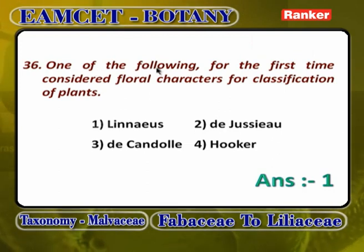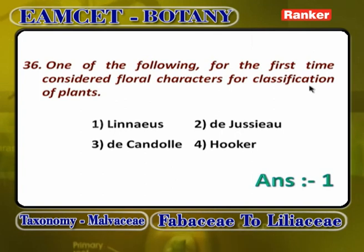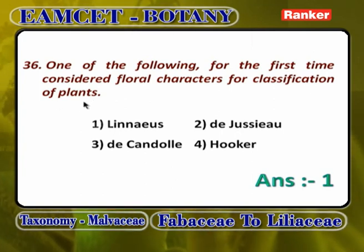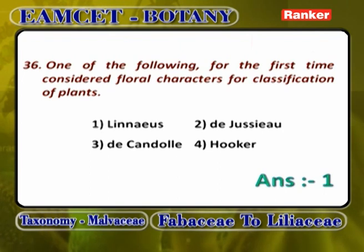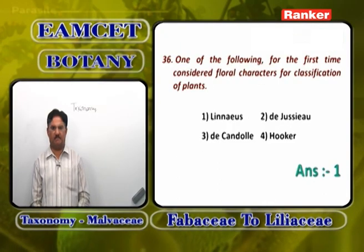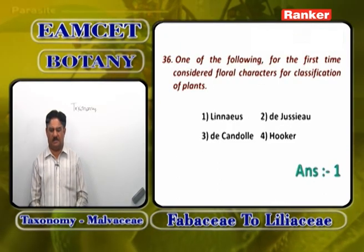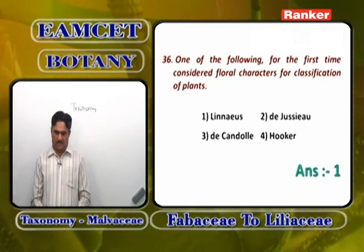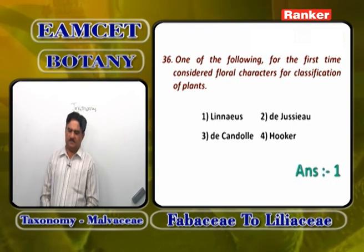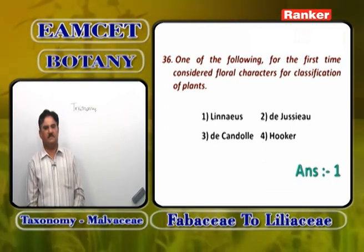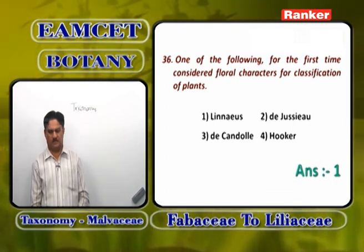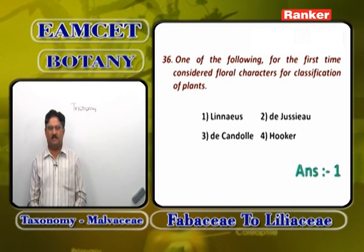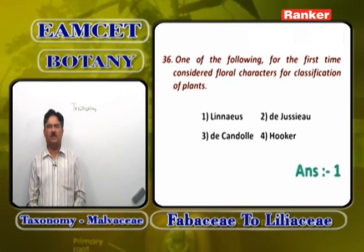One of the following scientists for the first time considered floral characters for classification of plants. Floral characters — androecium and gynoecium, stamens and carpels, number, position, and other things — were taken into consideration by Linnaeus, not by de Candolle, Hooker, or Digestive.